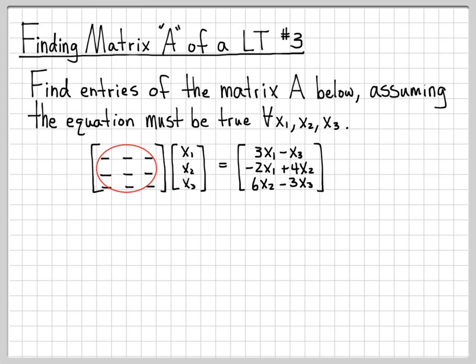What we don't know is what are these entries here of the A matrix. A is a 3 by 3 matrix, and we don't know what those entries are. That's what we'd like to find, and we know that it has to equal this when operating on the vector x, and this has to hold for all possible values of the vector x. So that's what we mean here, that's the for all symbol for all x1, x2, and x3, so for an arbitrary vector x.